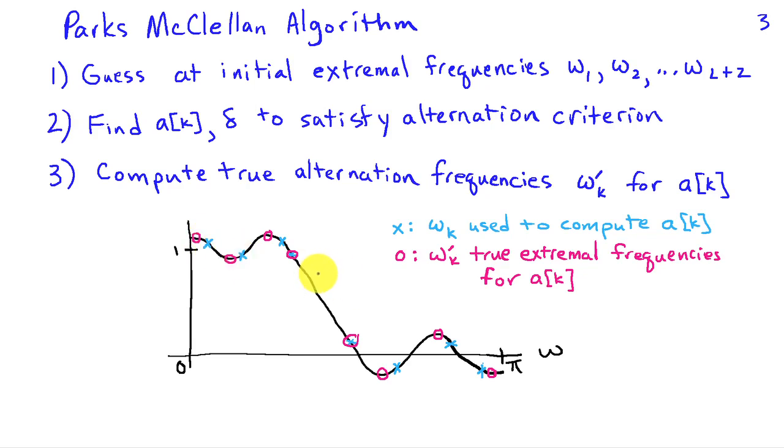I've illustrated that here where we have some initial set of extremal frequencies that we began with as the blue X's and those are the omega k's that are used to compute the AKs. And then we find the actual response that's generated by those AKs and that's going to be this black curve here, the sum from K equals 0 to L, AK cosine of K omega. And then what we do is we look at this particular curve and find the true alternation frequencies which are indicated by the magenta circles. And those in general might be different than our initial guess.